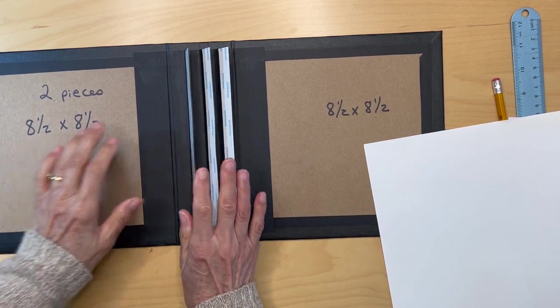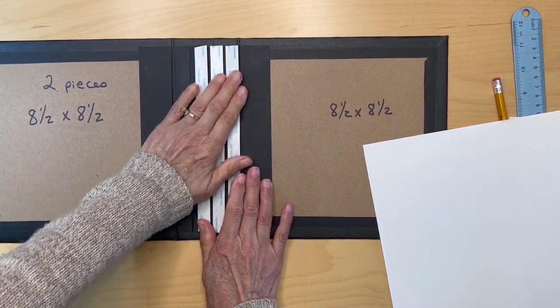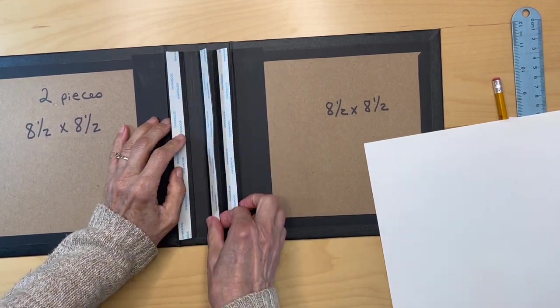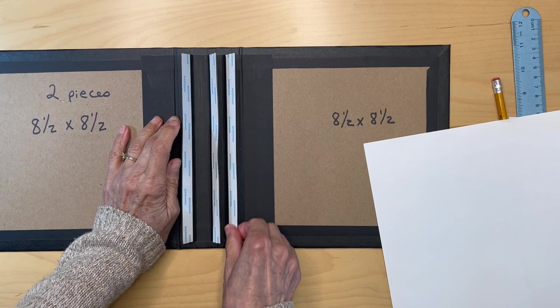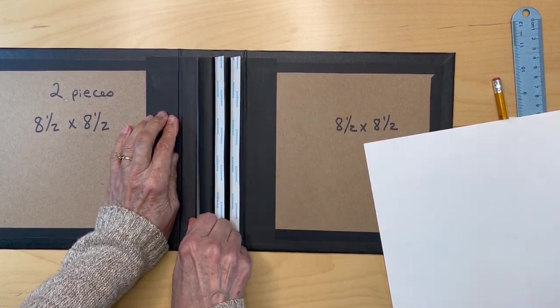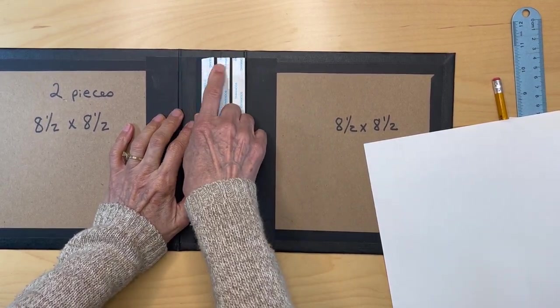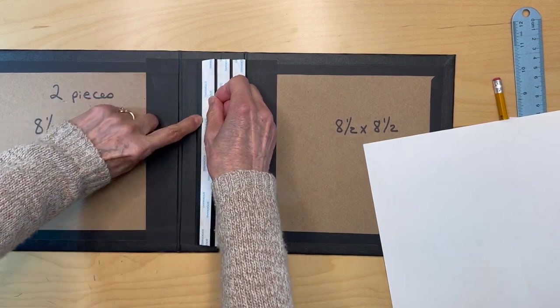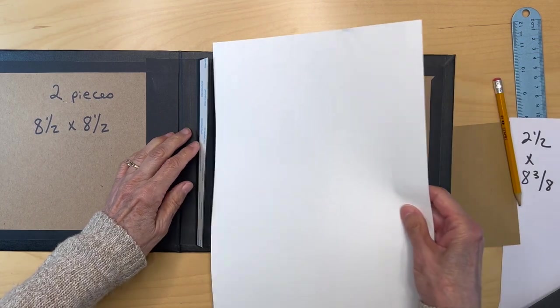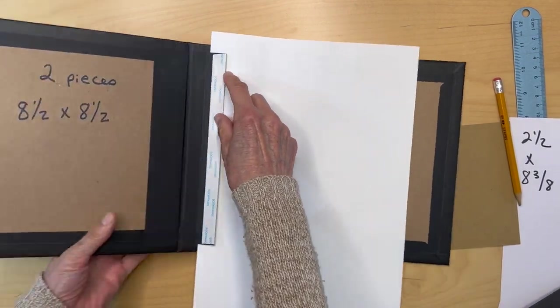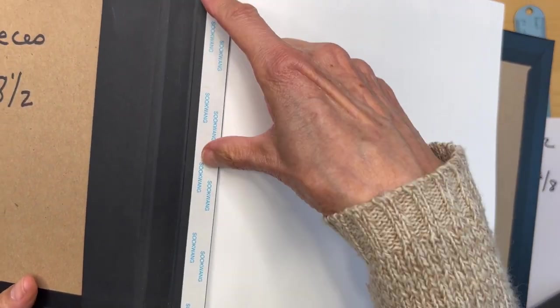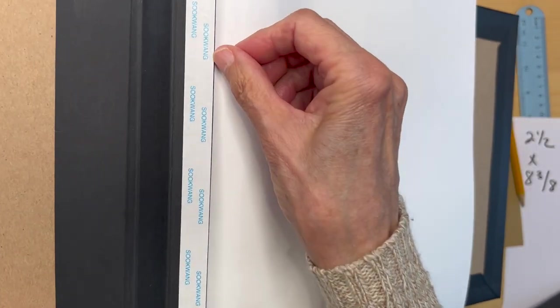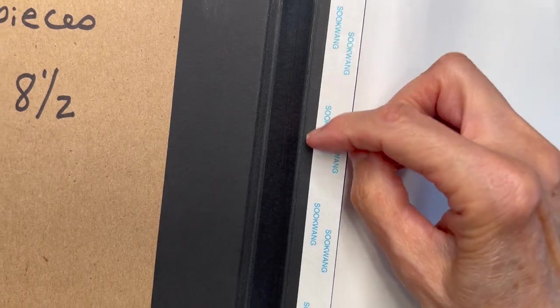Now we're ready to put our pages in our book. I've already placed my score tape. This is half inch score tape because these are three quarter of an inch tall hinges. So you're going to be left with a quarter of an inch at the bottom here. Once you put your half inch tape, you have a quarter of an inch left down here.